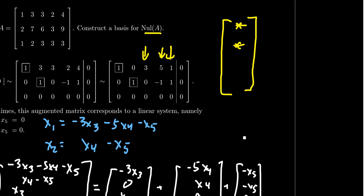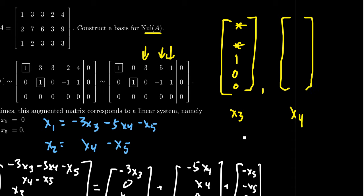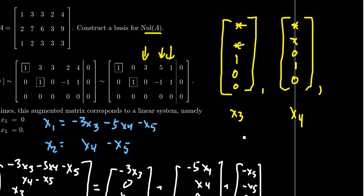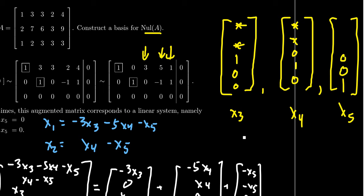For the free variables, you're going to put a 1 or a 0 depending on which free variable vector you're building. For x3, put a 1 in the third spot and 0 in the fourth and fifth. For x4, put a star where the dependent variables go, a 1 in the fourth position, and 0 in the other free variable spots. For x5, put a 1 in the fifth position and 0 in the indices corresponding to the other free variables, with asterisks in the first and second spots because those are the dependent variable positions.